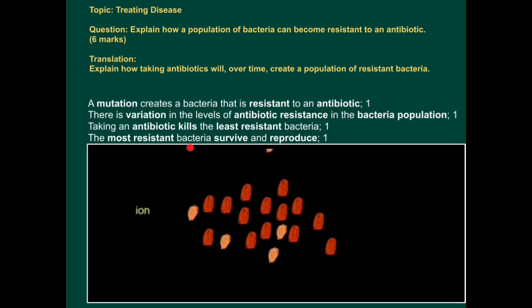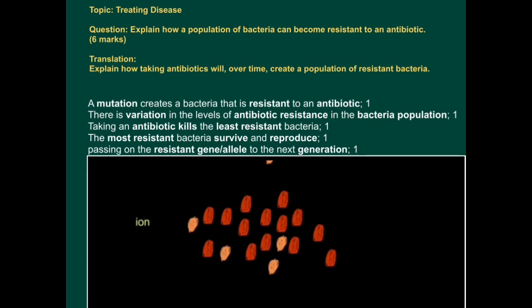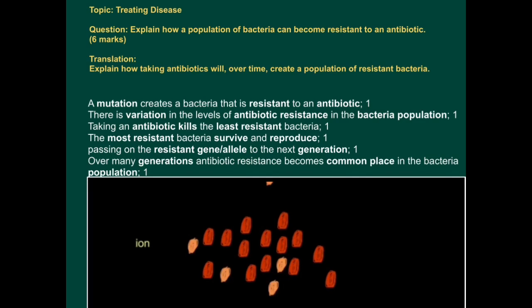The most resistant bacteria will survive and reproduce, and therefore pass on the resistant gene to the bacteria they produce — passing on the resistant gene or allele to the next generation. And like with any question on natural selection, you have to say that over many generations antibiotic resistance becomes commonplace in the bacterial population.